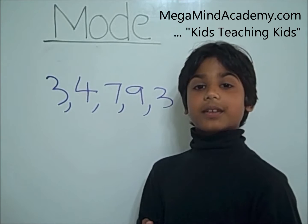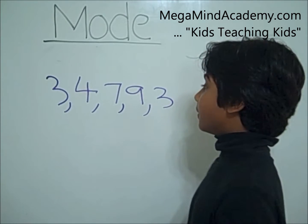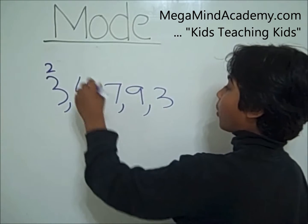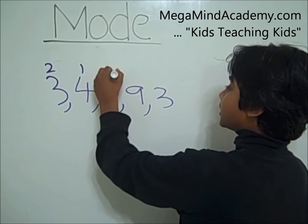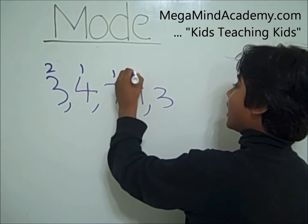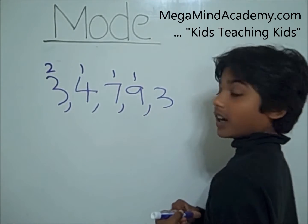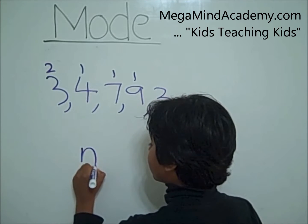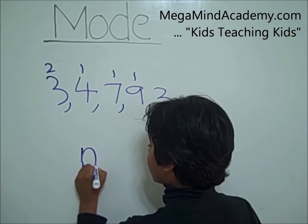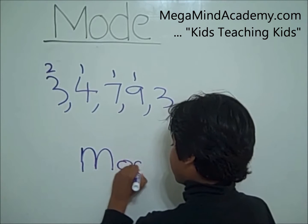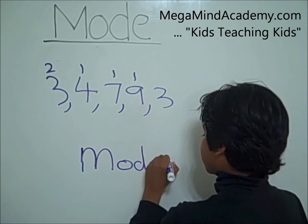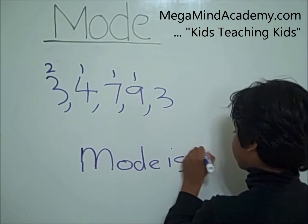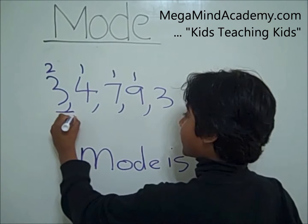Well, we have to find the number that occurs most often. 3 occurred twice, 4 occurred once, 7 occurred once, and 9 occurred once. 3 occurred the most, so the mode is 3.